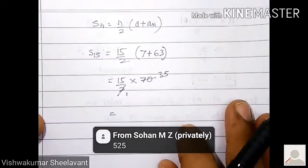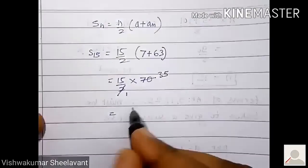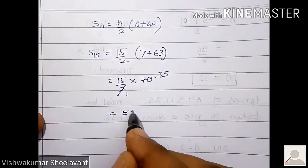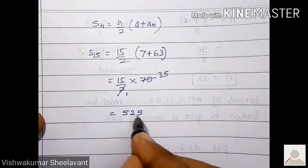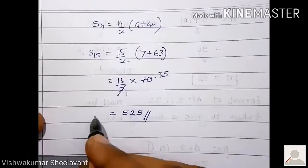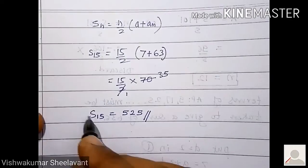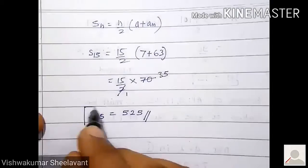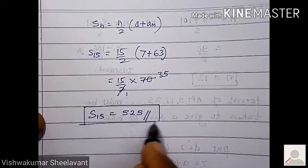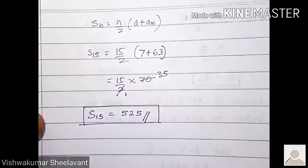If you multiply, you will get 15 into 35 is equal to 525.